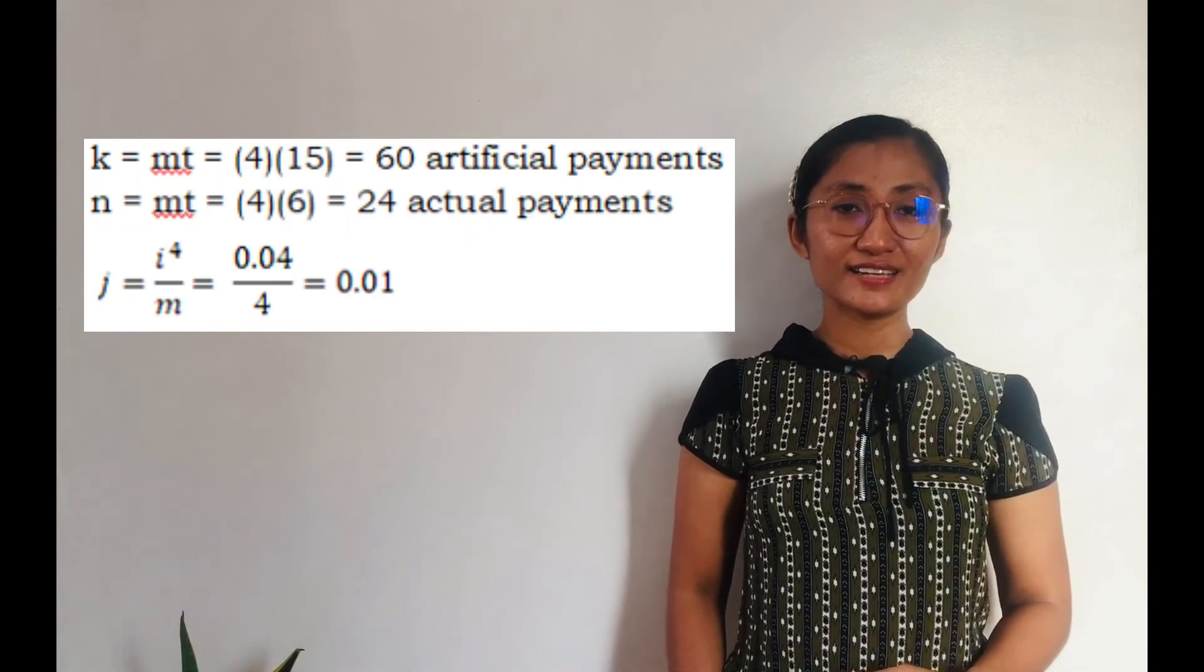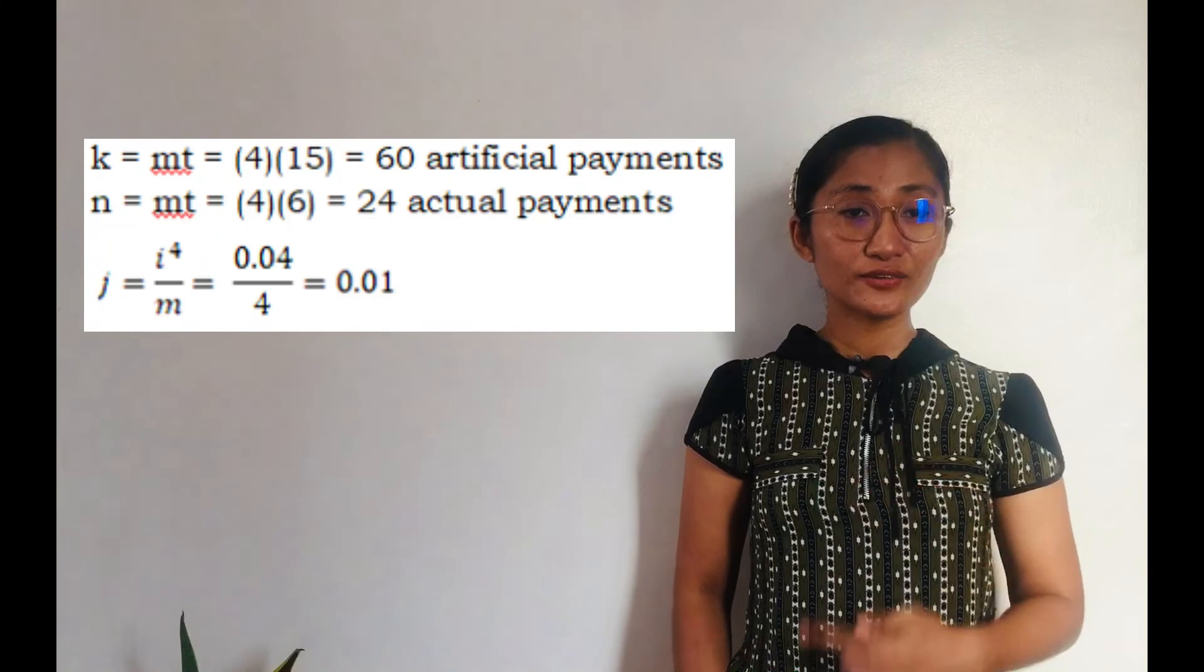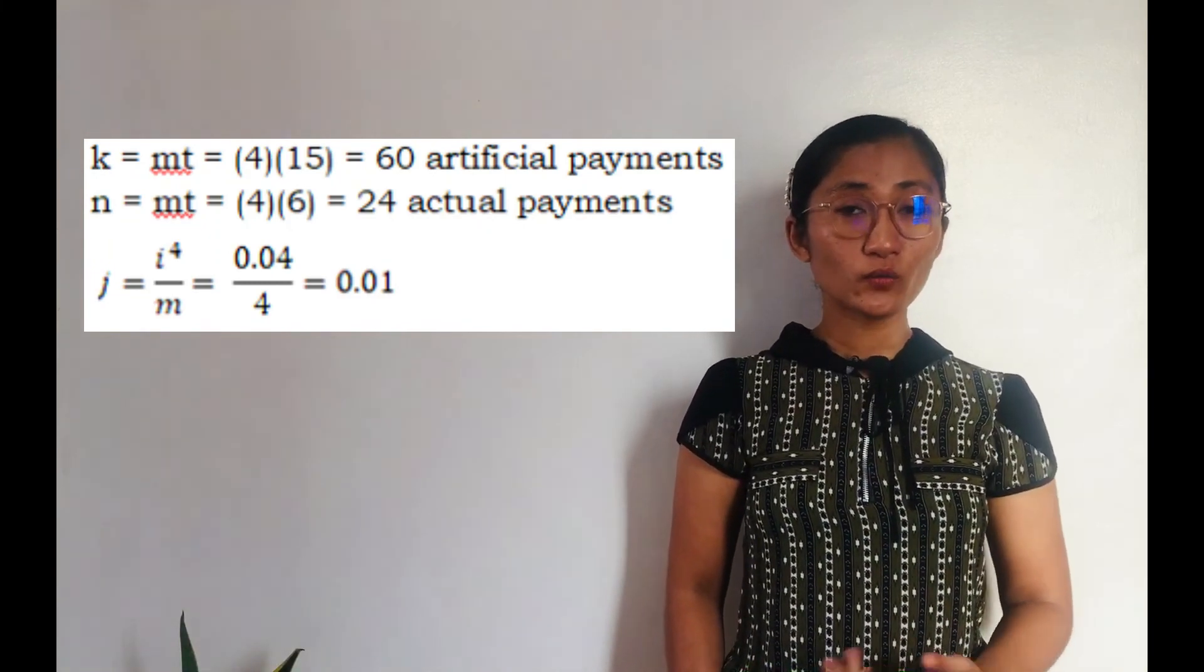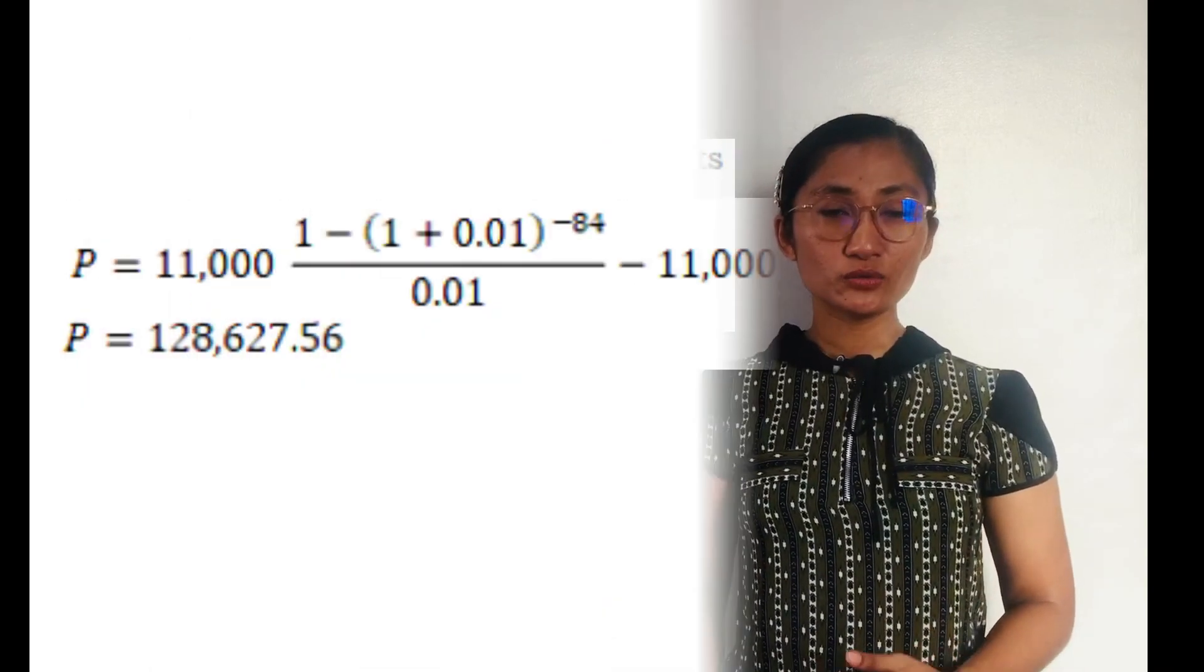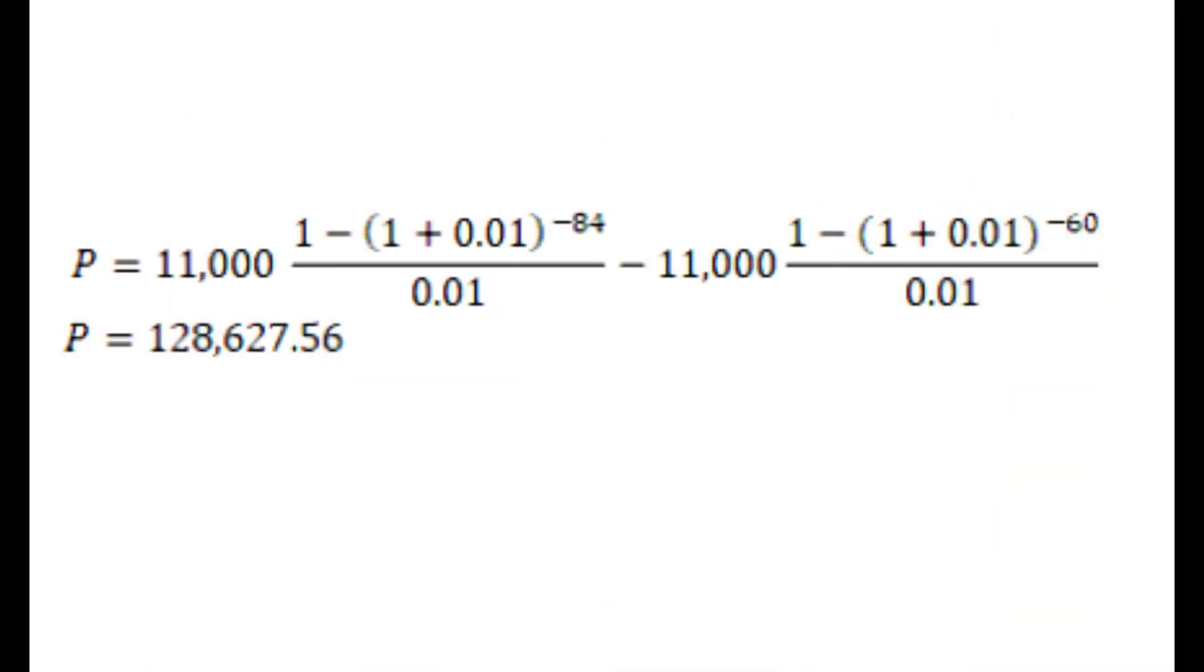The period of deferral is 60 periods or 63 month intervals on a quarterly basis. By substitution and using this formula, our R is 11,000, our J is 0.01, our K is 60, and we also have solved for N already. Using our calculator or by manipulating the operations involved in this equation, you'll get the present value of the deferred annuity which is equivalent to 128,627.56. Therefore, the present value of these monthly pensions is 128,627.56.